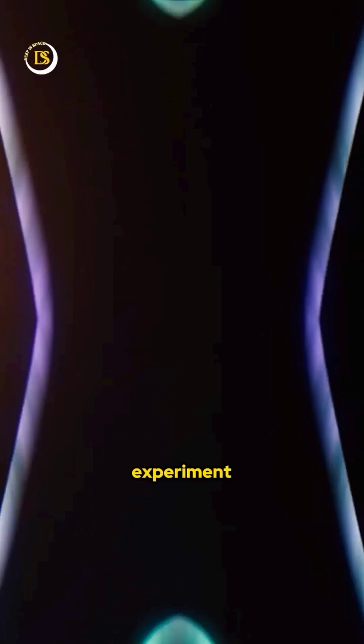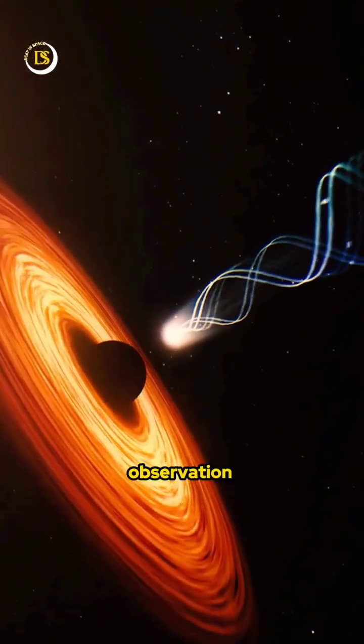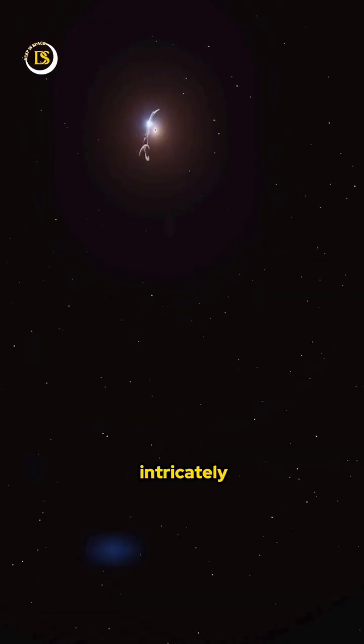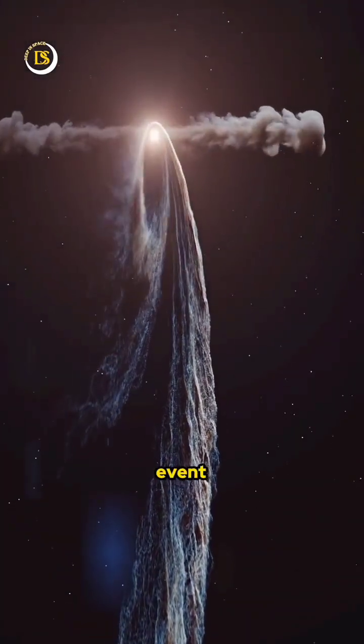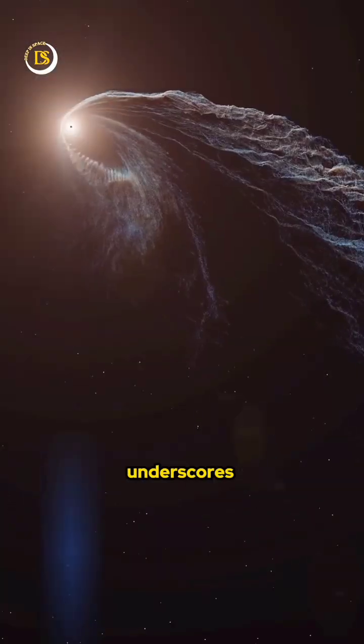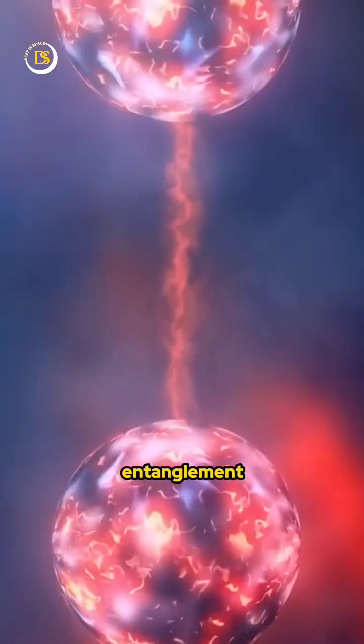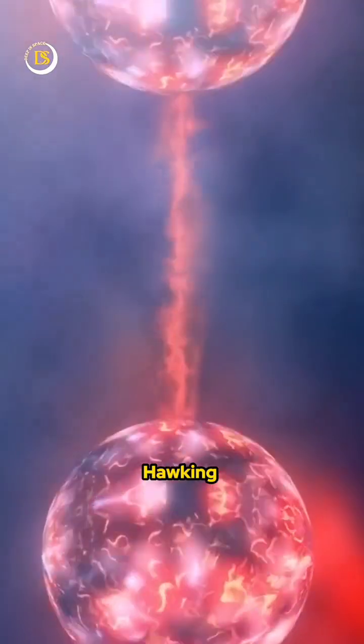During the experiment, researchers made a remarkable observation that Hawking radiation is intricately tied to the entanglement of particles situated on opposite sides of the black hole's event horizon. This finding underscores the essential role that quantum entanglement plays in the generation of Hawking radiation.